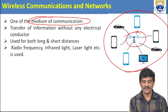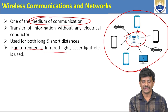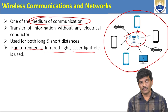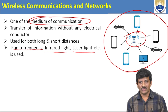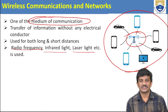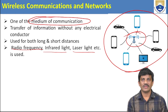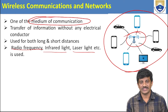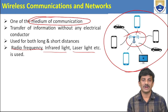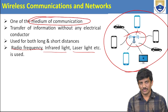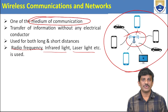We can use radio frequency, infrared light, laser, or Bluetooth for connection establishment between the transmitter and receiver. These are the mediums for the wireless communication connection establishment.